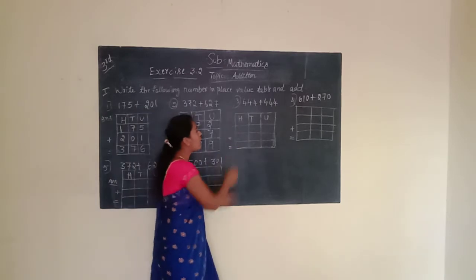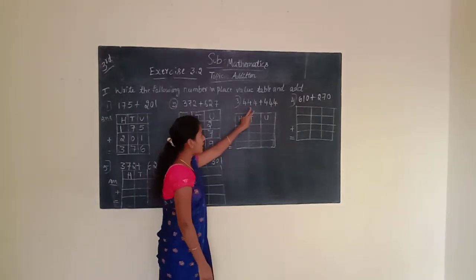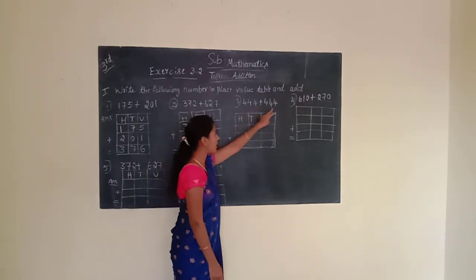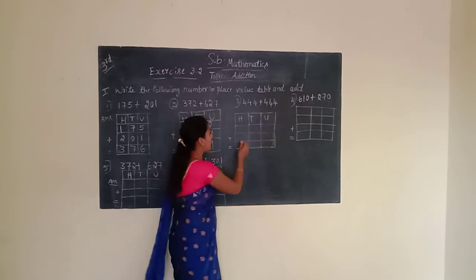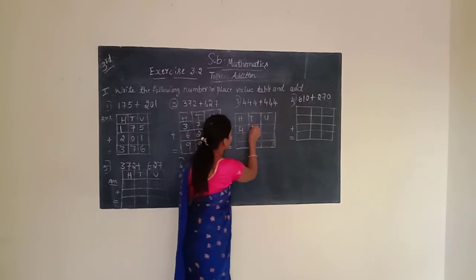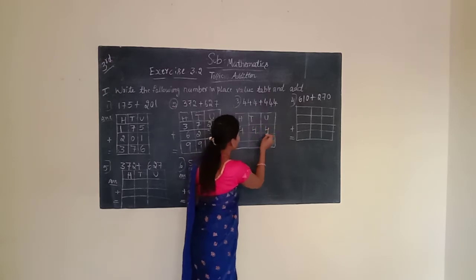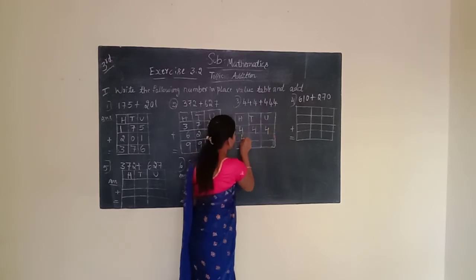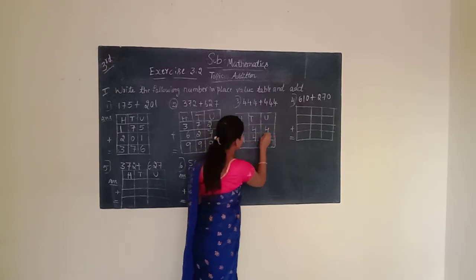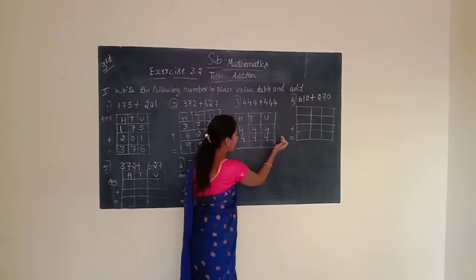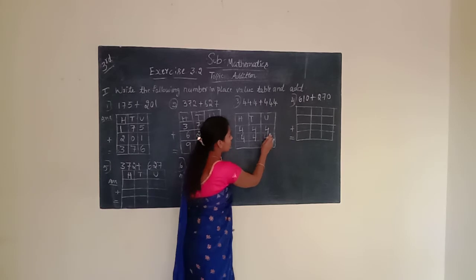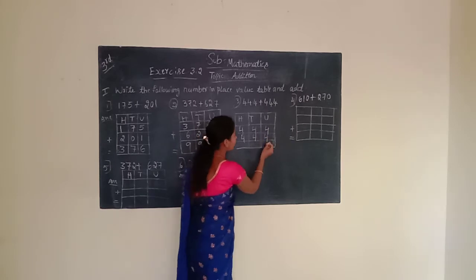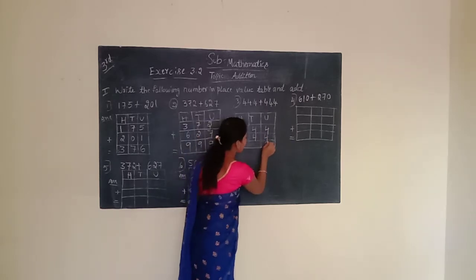Next, third question. The given number is 444 plus 444. Arrange this number in the place value chart — 444 plus 444. Now we have to start adding. We have to start from the unit place. Unit place is having 4 and 4. 4 plus 4 is 8. We have to write 8.